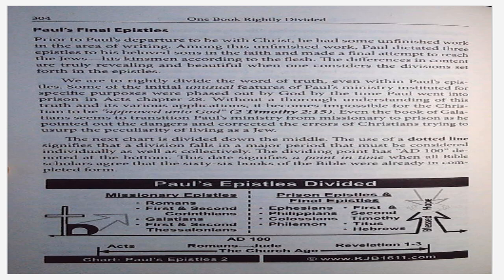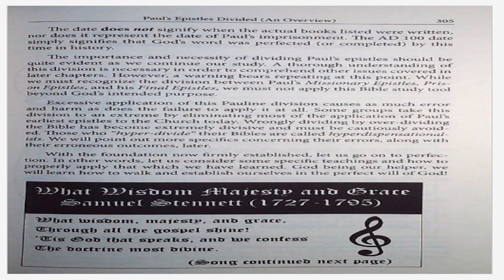The next chart is divided down the middle. The use of a dotted line signifies that a division falls in a major period that must be considered individually as well as collectively. The dividing point has AD 100 denoted at the bottom. This date signifies a point in time when all Bible scholars agree that the 66 books of the Bible were already in completed form. The chart on page 304 is titled Paul's Epistles Divided. The date AD 100 does not signify when the actual books listed were written, nor does it represent the date of Paul's imprisonment. The AD 100 date simply signifies that God's word was perfected or completed by this time in history. The importance and necessity of dividing Paul's epistles should be quite evident as we continue our study.